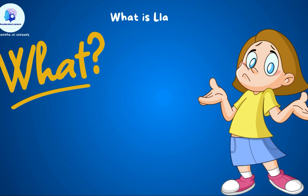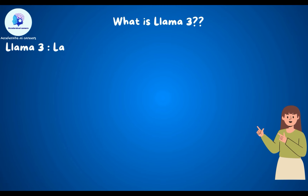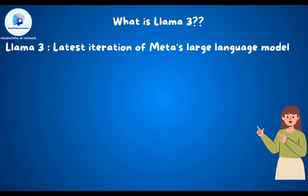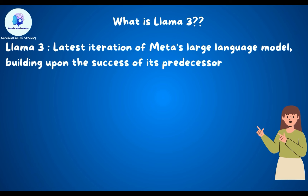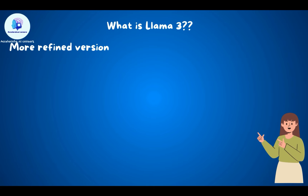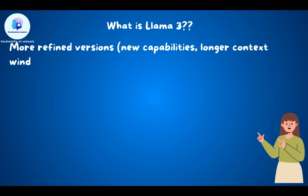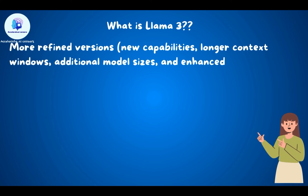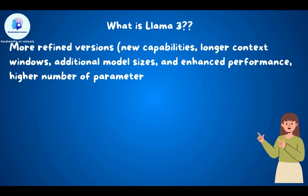LAMA 3 is the latest iteration of Meta's language model, building upon the success of its predecessor LAMA 2. Two versions have been released so far — 8 billion and 70 billion parameters — which support a broad range of use cases. More refined versions with new capabilities, longer context windows, additional model sizes, enhanced performance, and higher parameter counts will be released soon along with the LAMA 3 research paper, as announced by Meta.